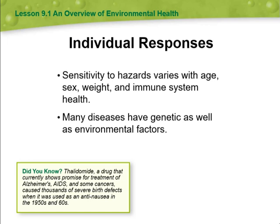We have two factors: sensitivity and genetics. People with health issues, such as asthma and compromised immune systems, are often more sensitive to biological and chemical hazards than healthy people. That is, they are more likely to feel the effect of these hazards. Sensitivity can also vary with sex, age, and weight.